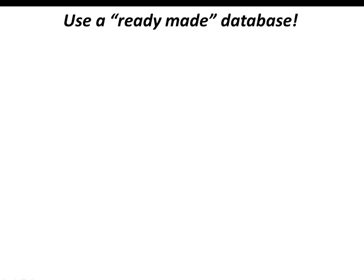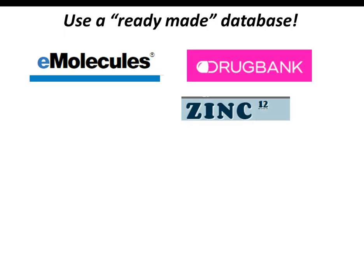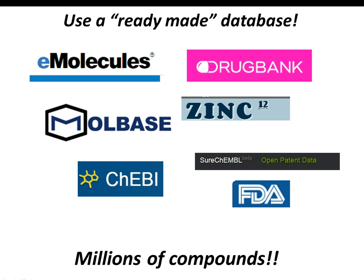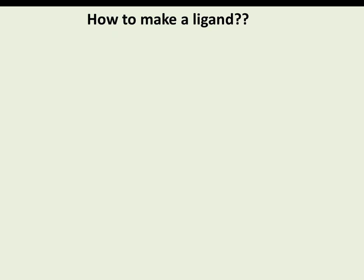You can also make use of ready-made databases available online, which provide two-dimensional as well as three-dimensional data for millions of compounds. For example, the DrugBank database has approximately 8,000 molecules, the ZINC database has more than one million molecules, and MolBase also carries more than one million compounds.